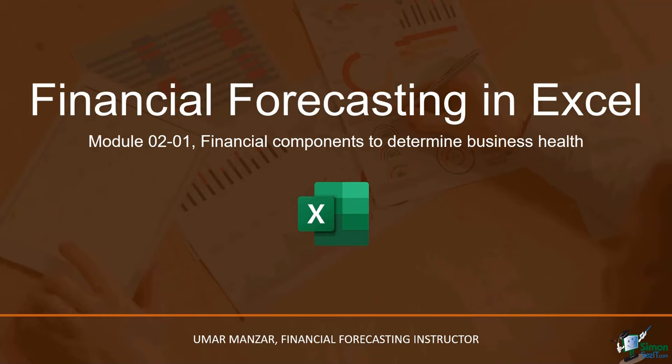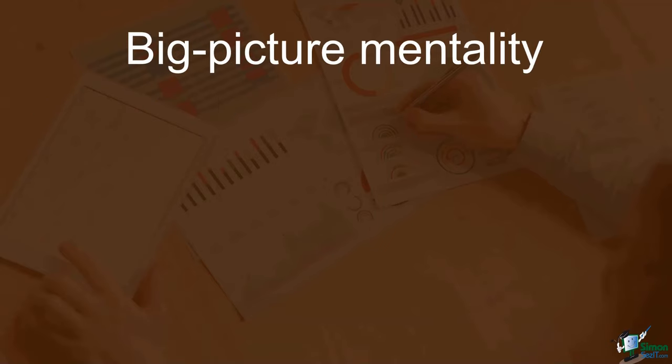Hello everyone, welcome to module 201, Financial Components to Determine Business Health in our Financial Forecasting and Excel course. Before we begin forecasting, you have to keep the larger strategic purpose clearly in mind so that we understand what we are trying to achieve with the exercise of financial forecasting. This is where understanding the financial health of the business comes in. With a big picture mentality, we can truly appreciate the benefits of financial forecasting.